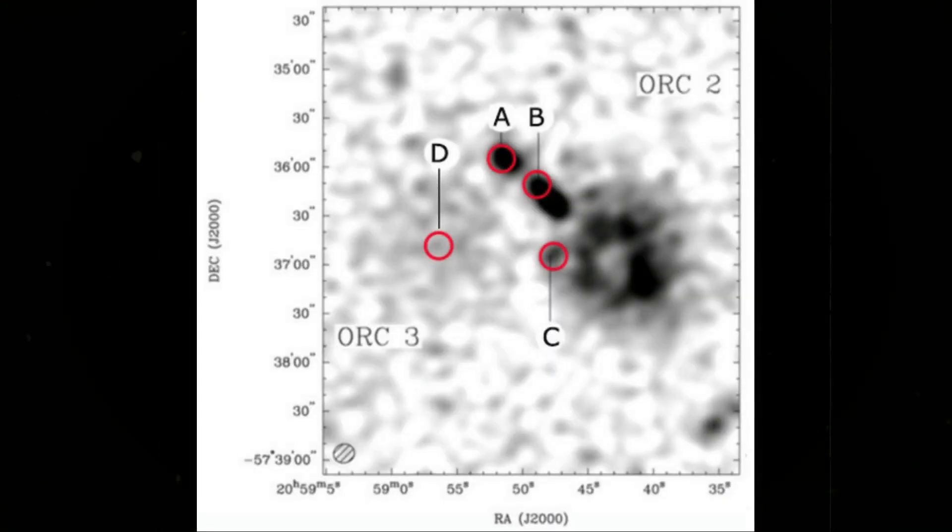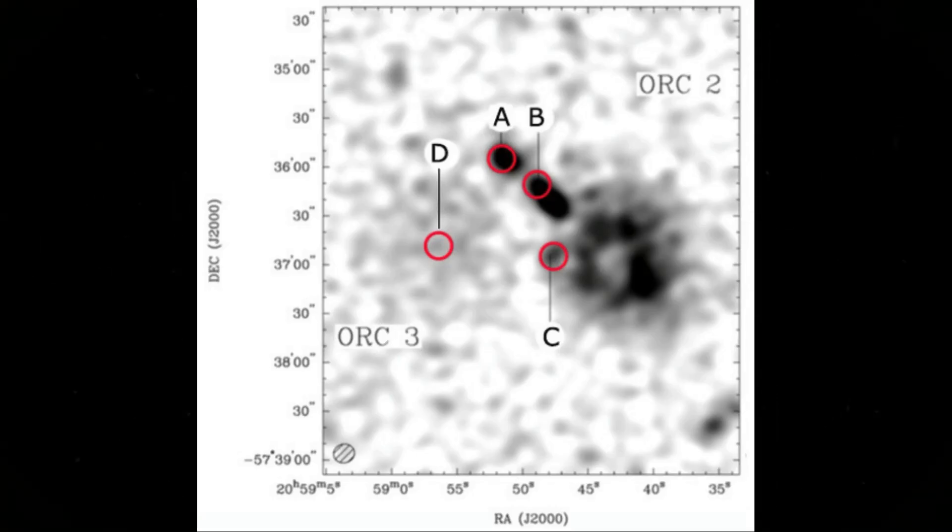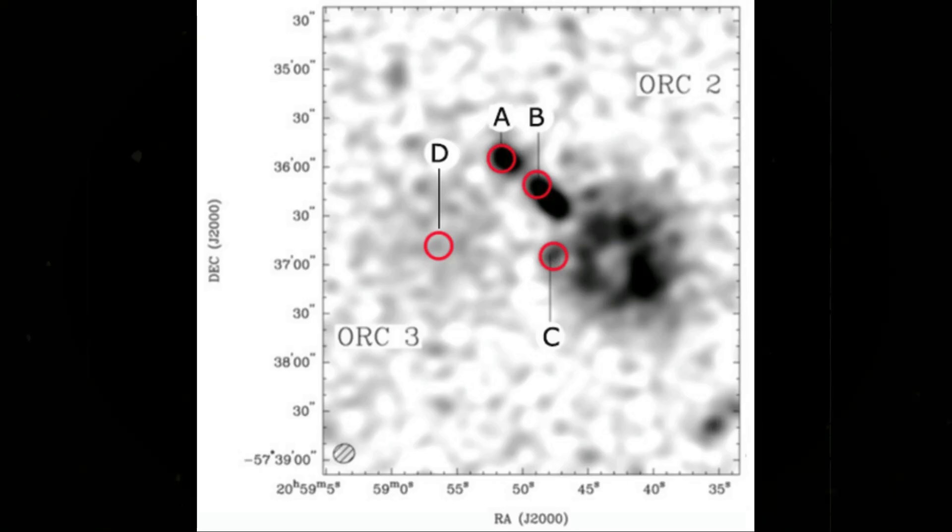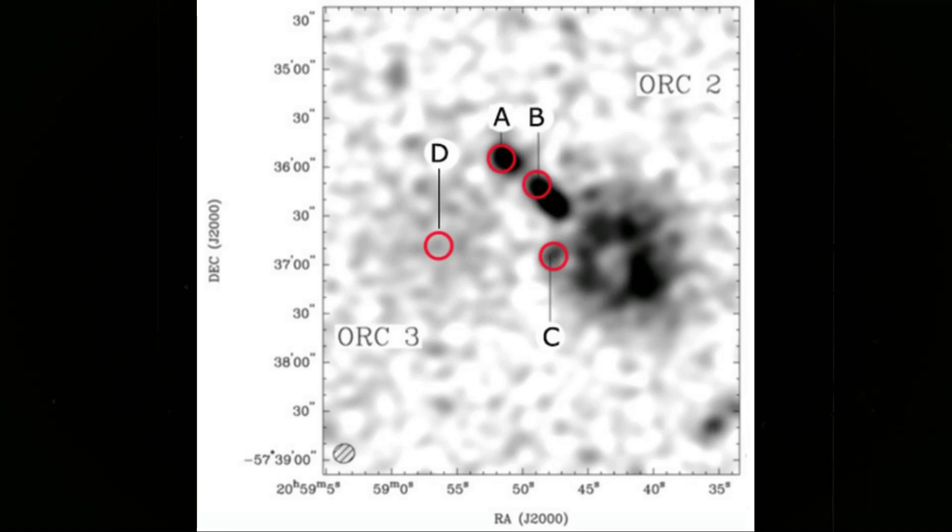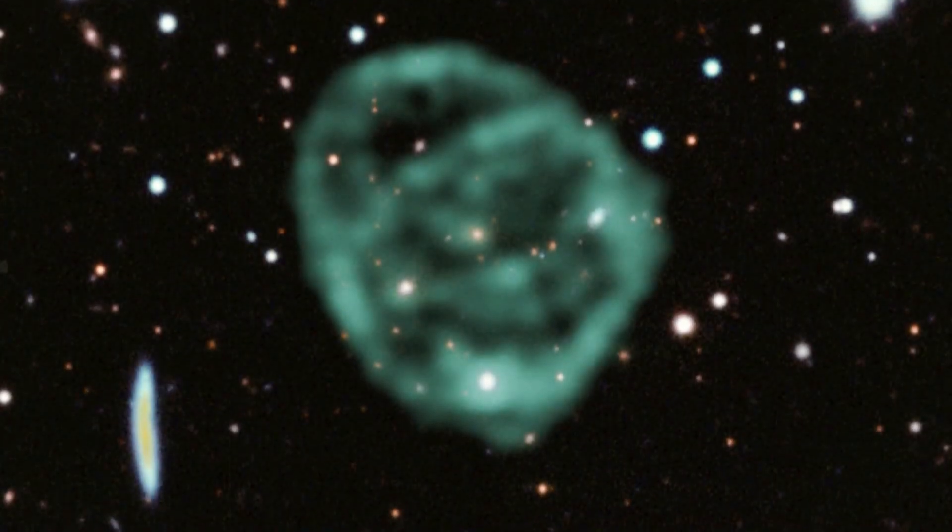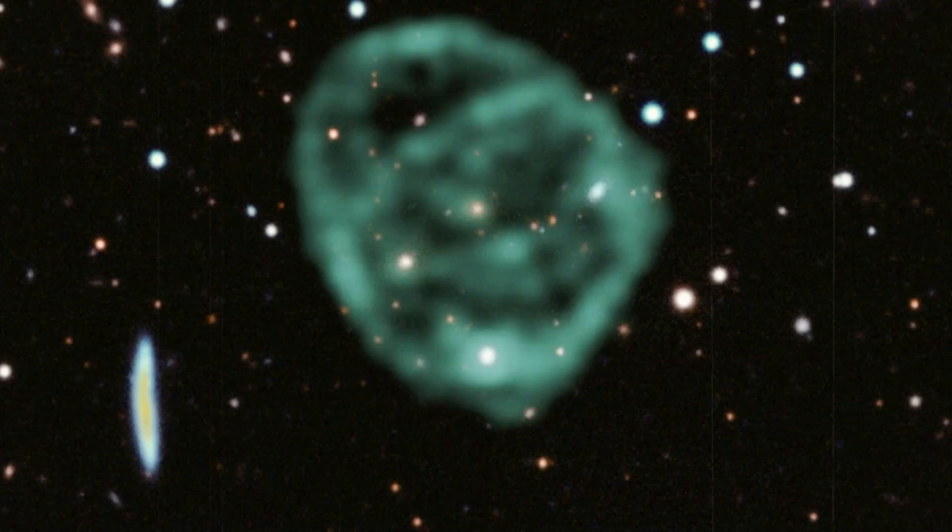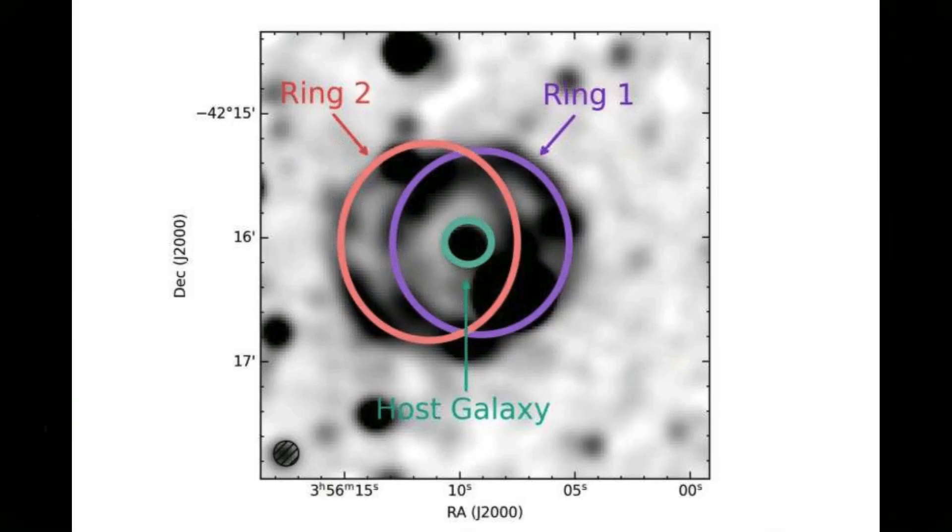What unsettles researchers most is not just the scale but the rarity. To date, only a handful of orcs have been catalogued. Voyager's detection may add one more to the list. But why so few? If the forces behind them are natural and frequent, the sky should be crowded with circles. The fact that it is not suggests either that the events are vanishingly rare, or that we are missing them, blind to a pattern our tools cannot yet reveal. It is this uncertainty, whether we are seeing cosmic outliers or the faint tip of a vast hidden population, that keeps astronomers awake at night.